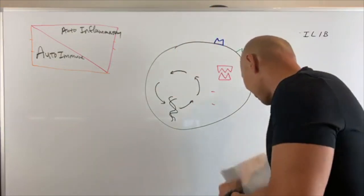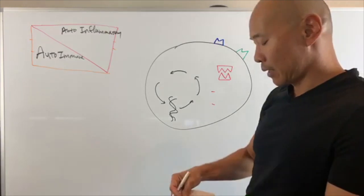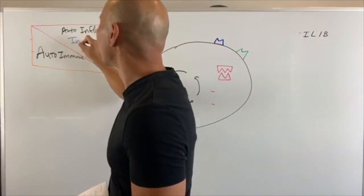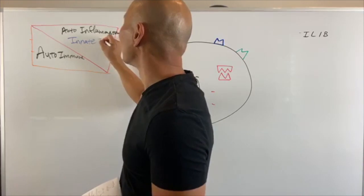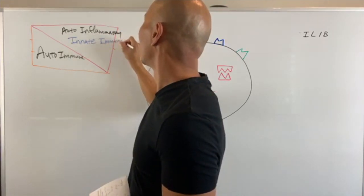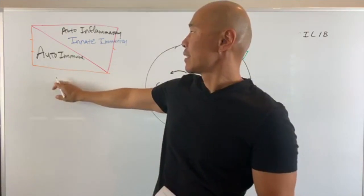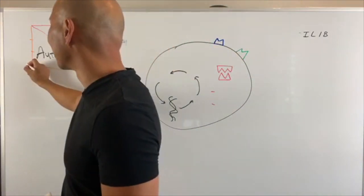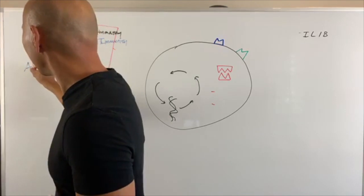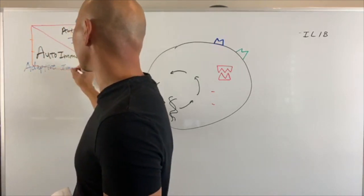Auto-inflammatory disease and autoimmune disease are different in that it's a different part of the immune system controlling each. Auto-inflammatory disease is controlled by what's called innate immunity, whereas autoimmune disease is mediated by what's called adaptive immunity.